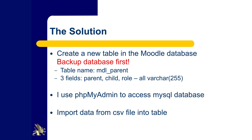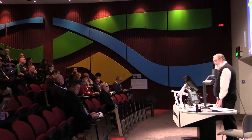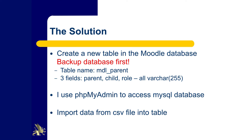You need to create a new table — call it something like 'moodle_parent' — with three fields: parent, child role, and role, matching that CSV file you created. I use phpMyAdmin to access the database, which is a free tool that allows you to access MySQL databases. Then you import the CSV data into the new table. If you've done it before it's easy; if not, it's not difficult and doesn't take very long.